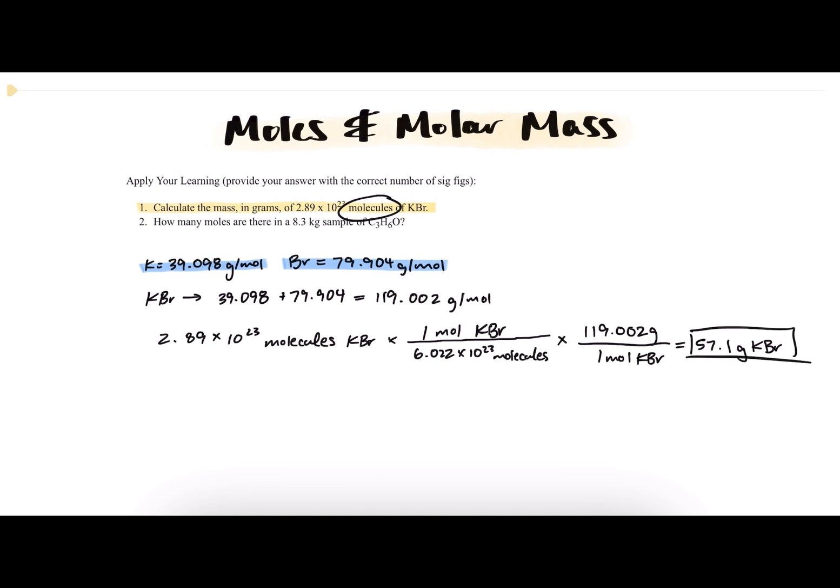And just real quickly, let's break this down. We started with molecules. But in order to use our molar mass, which is in grams per mole, we needed to convert molecules to moles. And to do that, we used Avogadro's number here.